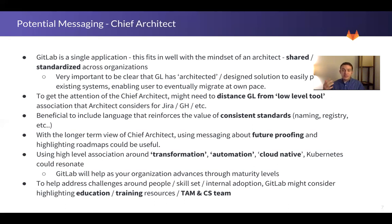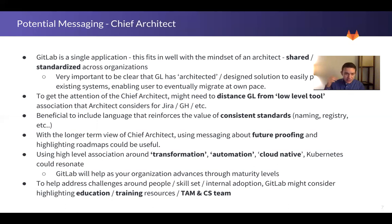Using language that enforces the value of consistent standards is important. GitLab being a single application means no differently named things across different tools, a consistent set of user permissions, and a very consistent experience from user experience to security governance. That consistency plays well to this persona. With a longer-term view, because the chief architect is concerned about long-term strategy and roadmap, talking about how they can future-proof their roadmap is appealing. The idea that GitLab can be a strategic partner for the organization is something the chief architect cares about.